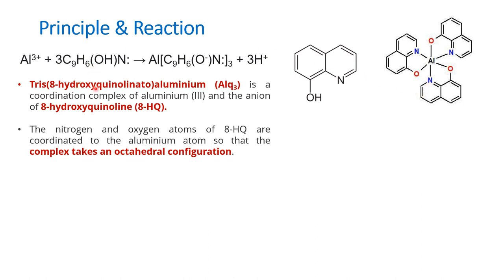When representing numericals in the name, we cannot use di/tri — rather we use bis/tris — because there is already a number (8) in the ligand name itself. To avoid confusion, whenever there is a numbering system in the ligand itself, when multiples of the ligand are used we use the prefix bis, tris, etc. Here there are three quinoline derivative units present, so we use the notation tris. This molecule is called tris(8-hydroxyquinolinato)aluminium.